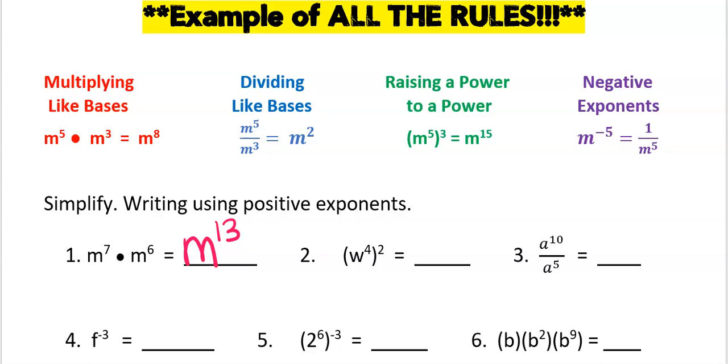Number two is raising a power to a power. This is when you distribute or multiply powers. Since my power is positive, I'm done.